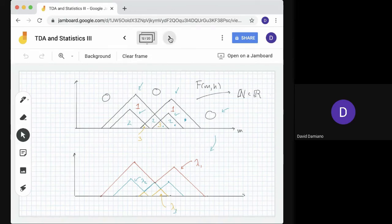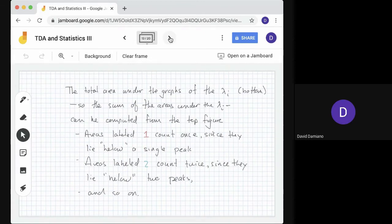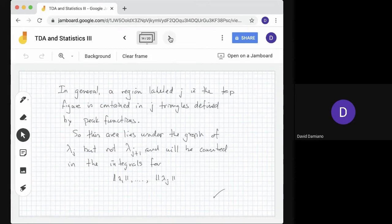If we go to the second graph, we see the landscape functions λ1 in red, λ2 in blue, and λ3 at the bottom, defined for those four peak functions. The total area under the graphs of the λi on the bottom is the sum of areas under the λi. It can be computed from the top figure: areas labeled one count once since they lie below a single peak, areas labeled two count twice since they lie below two peaks, and so on. In general, a region labeled j is contained in j triangles defined by peak functions, so this area lies under the graph of λj but not λj+1, and will be counted in the intervals for λ1 up to λj.